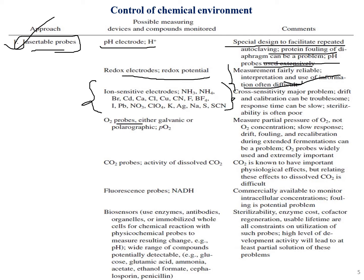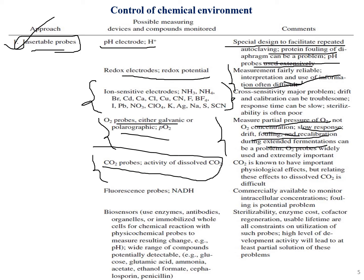These probes can act as O2 probes, which can be either galvanic or polarographic. They measure the partial pressure of O2, not O2 concentration directly, and can be slow in response with drift and fouling requiring recalibration. They can also be used as CO2 probes, and fluorescence probes to detect the presence of NADH. A probe is essentially a biosensor.